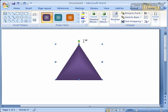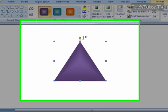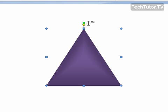Now what you're looking for is this green circle at the top of your object. This is the green rotate lever, and this is what is going to allow you to rotate your object.